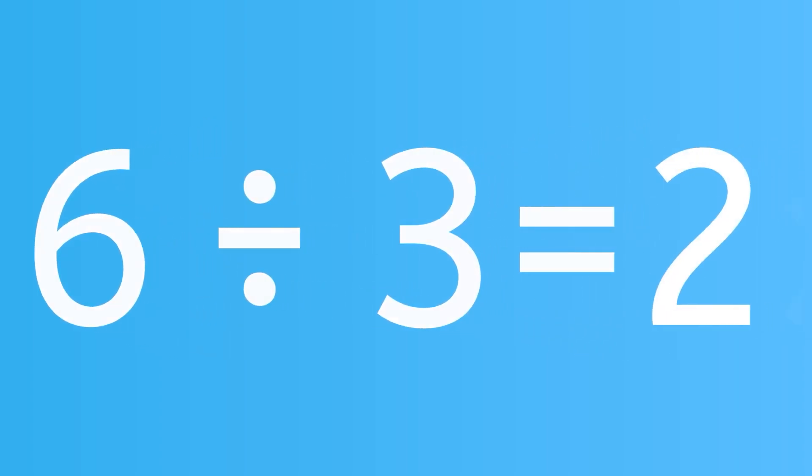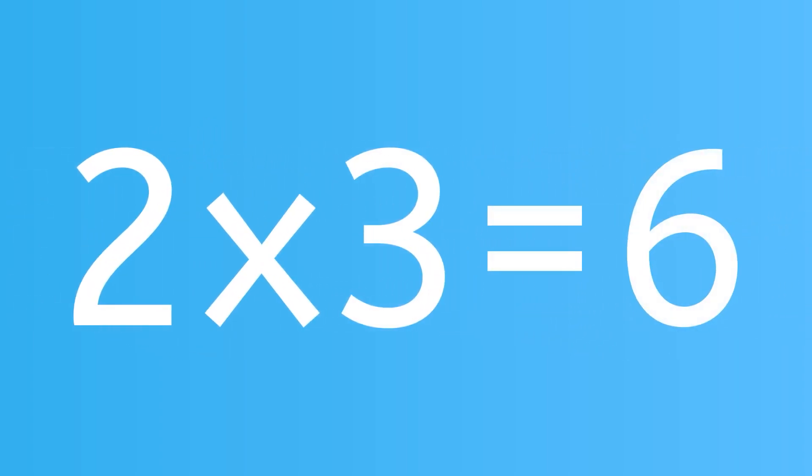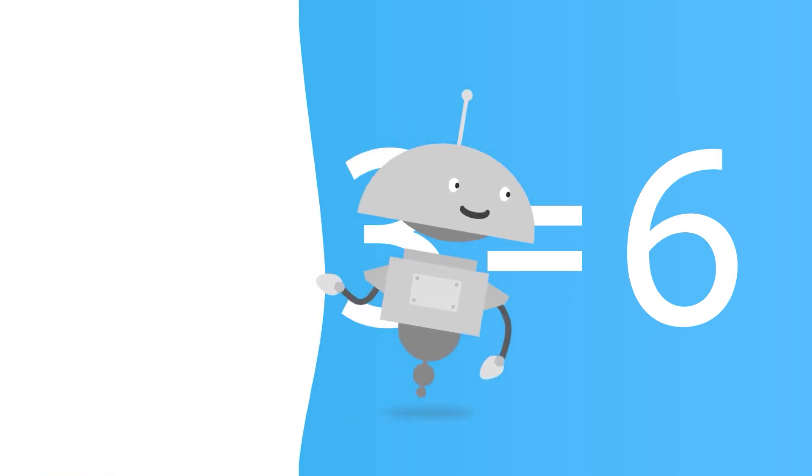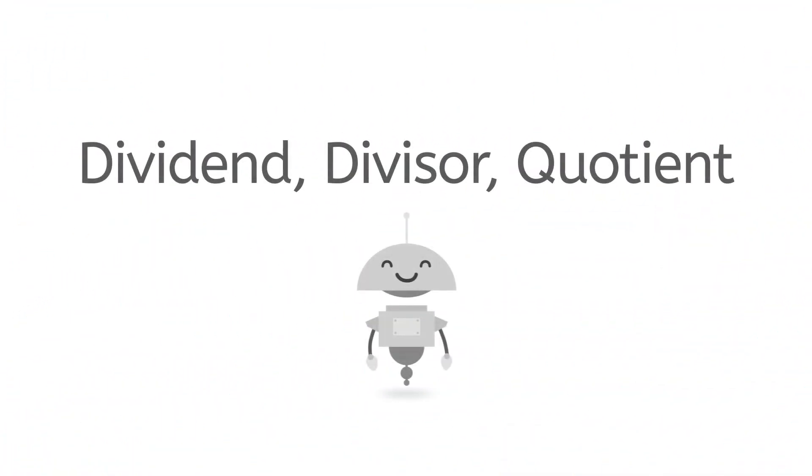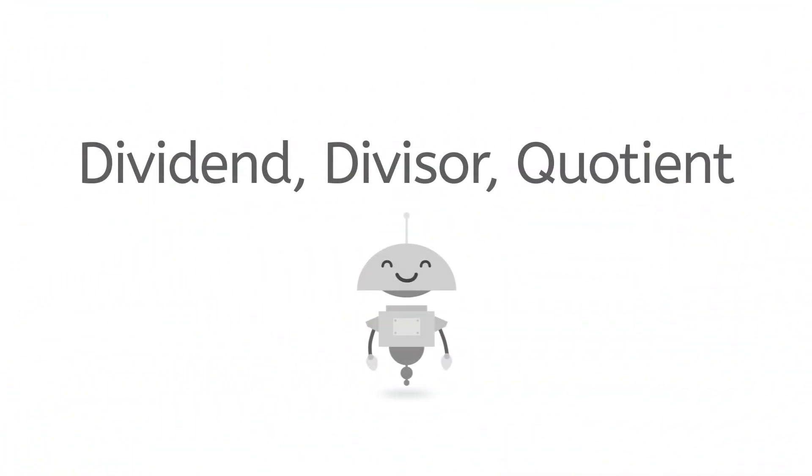Division is the opposite of multiplication. Let's look at the simple problem we've got here. Division is asking you how many items would be in each group if we took that 6 and divided it into 3 groups. The answer is 2. What's 2 times 3? It's 6. You can check your work by multiplying the answer.